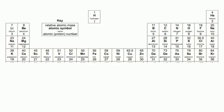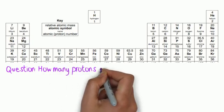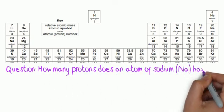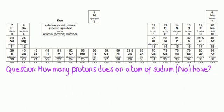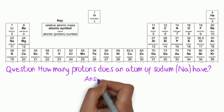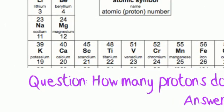Now let's try some questions to assess your understanding. How many protons does an atom of sodium have? The answer is 11. Just look at the bottom number.